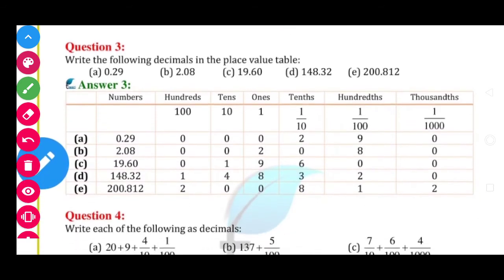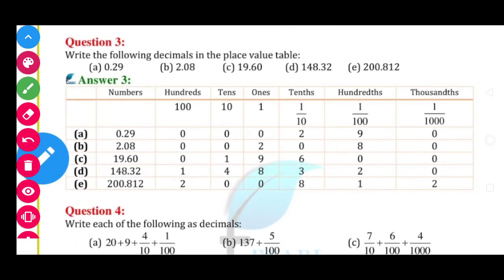Then in the next question — Question number 3: write the following decimals in place value table. Ye Question number 2 ka reverse hai pura. Question number 2 mein aise table se humne number likha. Now in this question, number se box mein hum usko likhenge.